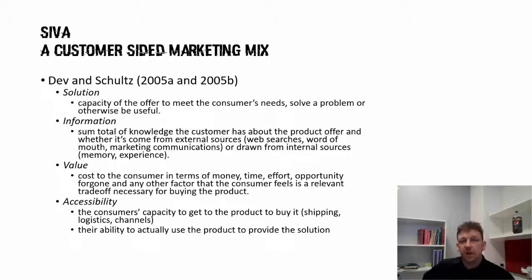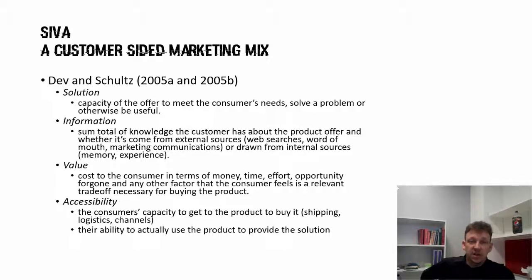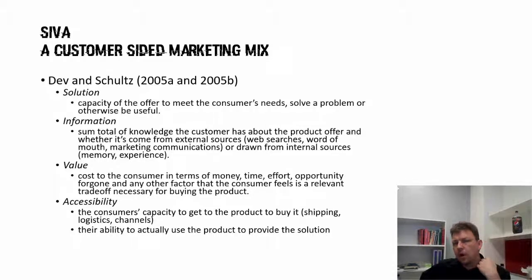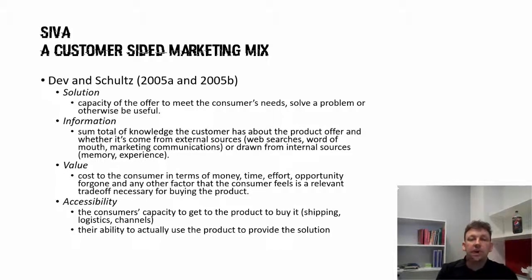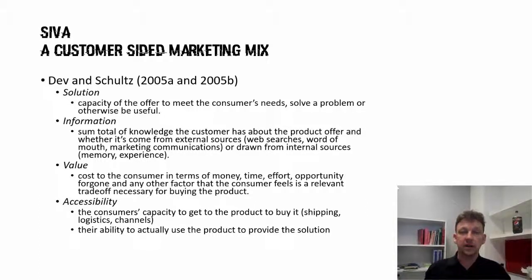Your second marketing mix is one I have a real love for. I'm about the only person on the planet really endorsing it other than the original creators. The Devon Schultz 2005 SIVA mix gives you a way of viewing an offering from the customer side. It's worth doing this for the e-marketing approach because the question shifts from 'what do I create, what controls do I put in place' to 'what does the consumer get?' What's the solution? Someone is scrolling through Instagram — what is it they're seeking, what can you offer them that meets that need? Information: where are they going to learn about it, where are they going to see it? The information that comes from you versus the information they draw from other places.